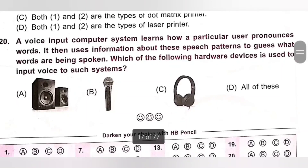Question 20 (Last question): A voice input computer system learns how a particular user pronounces words and uses that information to guess what words are being spoken. Which hardware device is used to input to such a system? A. Speaker, B. Microphone, C. Headset, D. All of these. A microphone is used to input voice to the computer. Option B, Microphone, is the correct answer.